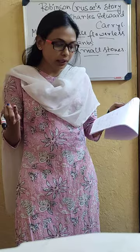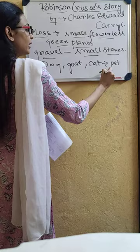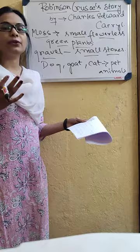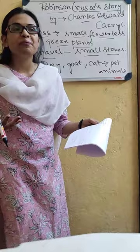So the pet animals Robinson Crusoe had on the deserted island were a goat, a dog, and a cat. These were his pet animals and also his friends on the deserted island, and whenever he went out for a picnic he went with his pet animals. The author Charles Edward Caril has given many human-like traits to all the animals.